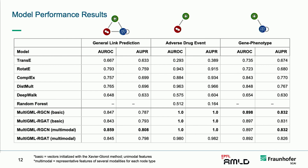I can now show some model results and comparisons to general geometric and knowledge graph embedding approaches. Our Multi-GML relational graph convolutional and graph attention networks use basic embeddings, randomly initialized embeddings, and the feature embeddings discussed earlier. We first trained on general link prediction, then hyperparameter-optimized it for the side effect and adverse drug event prediction task, where it performs really well. Even the unoptimized model for gene-phenotype prediction outperforms the other baseline models.